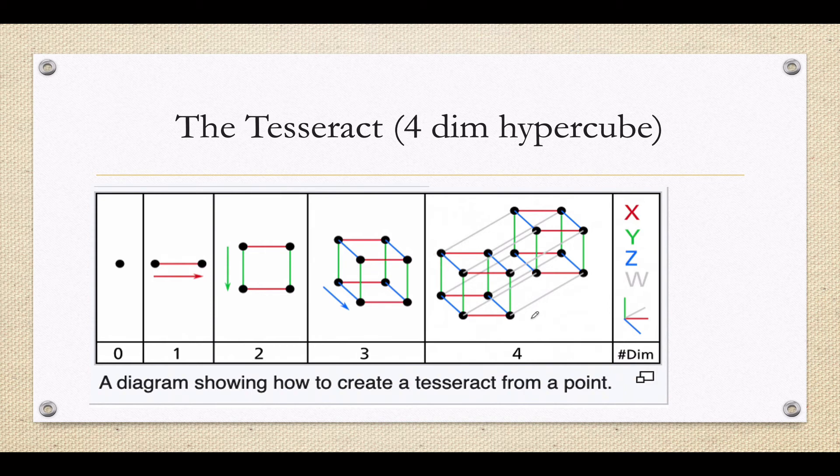But what you might want to take from this is this new tesseract would have, what, 16 vertices? Have the eight that I have over here and an additional eight that I have over here. What about edges? Well, my original cube had 12 edges, right? Four going around the front, four going around the back, and four connecting front to back.